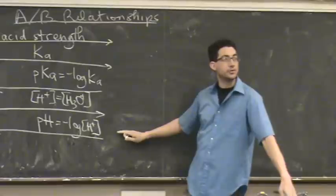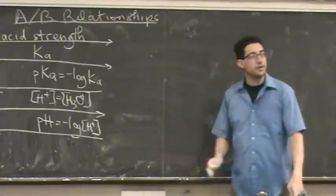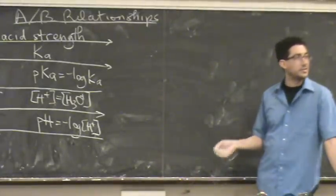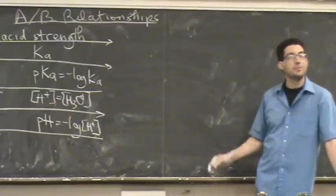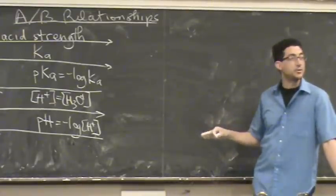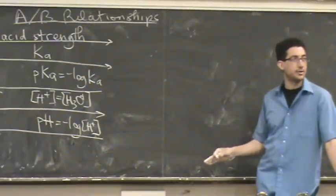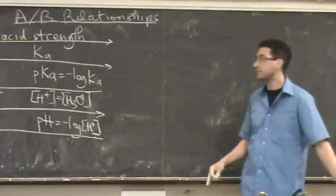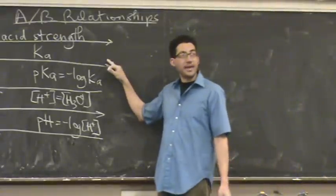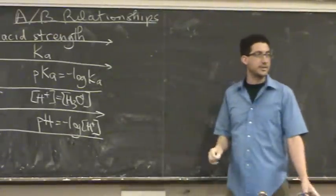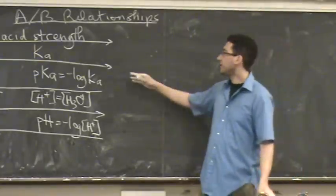pH is based on concentration. So knowing the original concentration, say the acid, will change pH. So pH is very changeable based on the concentration. pKa or Ka does not change based on concentration. So they're constant.